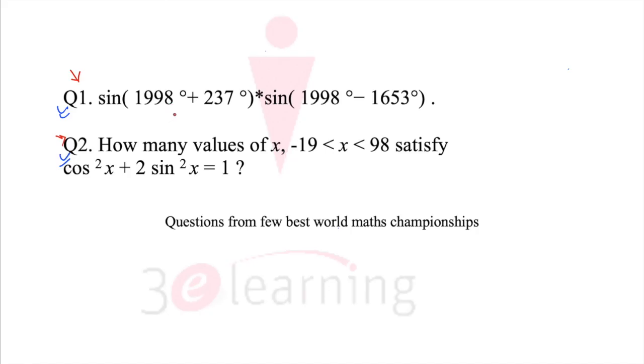These two are quite easy questions. One is sin this into sin this. First of all, we need to add the value: 1998 plus 237 is nothing but 2235 degrees.